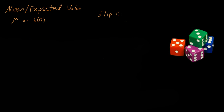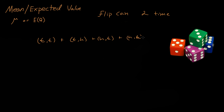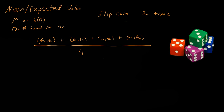Now let's say we flip a coin two times. How many different outcomes are there? You can get tails-tails, tails-heads, heads-tails, or heads-heads. So there are four outcomes. If we wanted the average we would divide by the total number of outcomes, which is four. But we need to assign values to these outcomes.